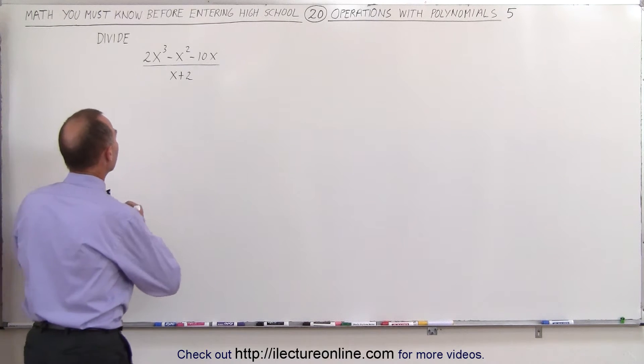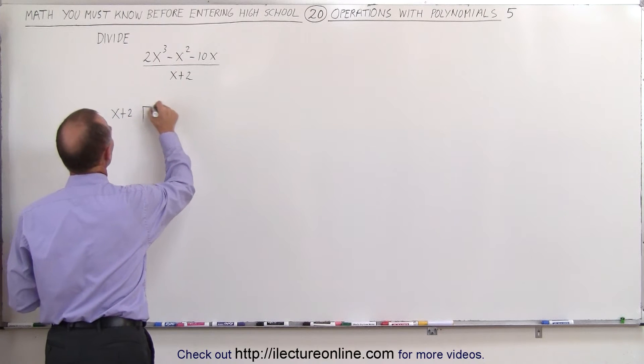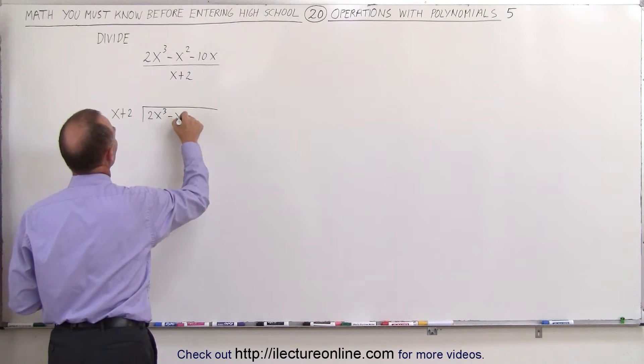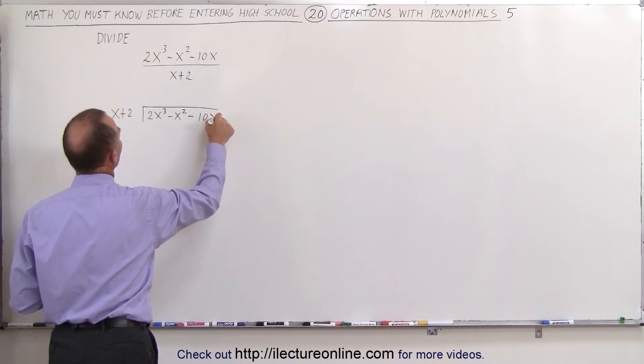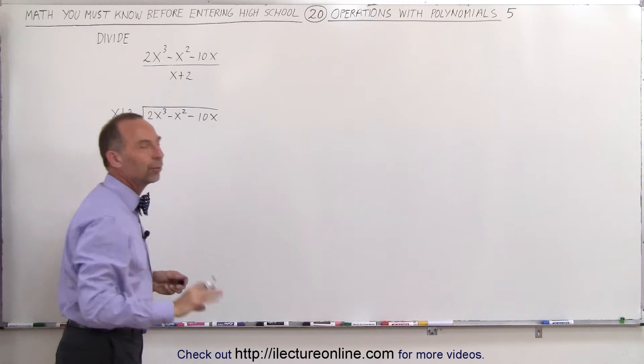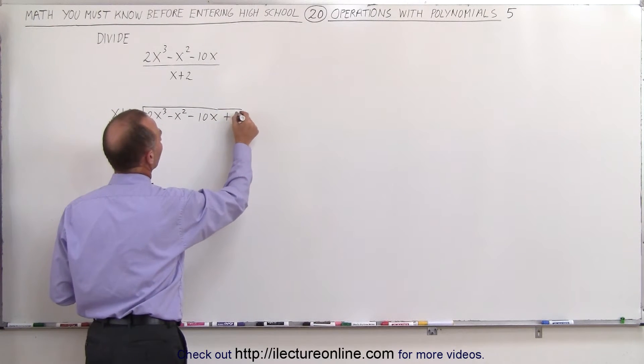So first we'll write it as follows: x + 2 will be divided into the polynomial 2x³ - x² - 10x. Notice there's no terms missing except for the last term, so you can think of it as maybe plus zero here.